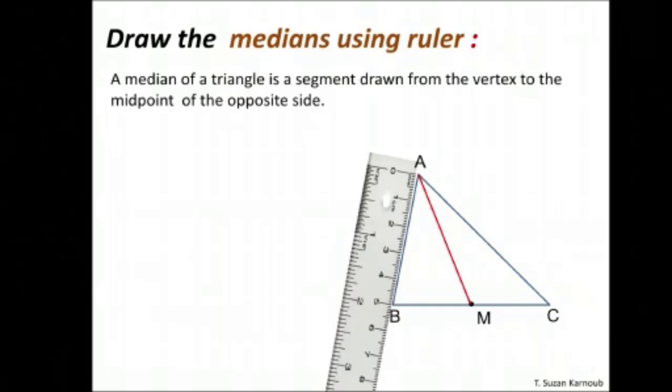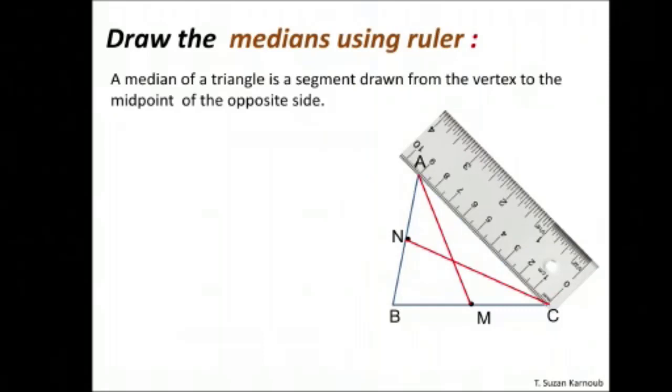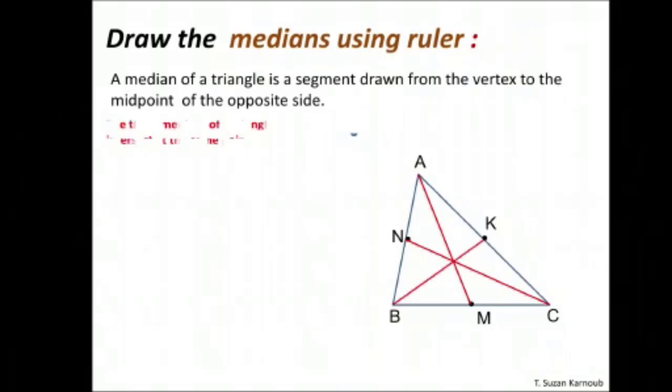I'm going to draw the median from C to AB. I find the midpoint and connect it. Then I draw the median from B to AC. After finding the midpoint, I connect it with vertex B. We notice that all the medians intersect at the same point.